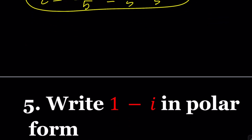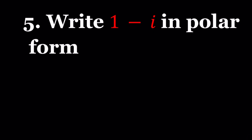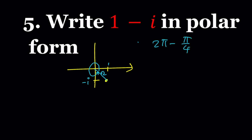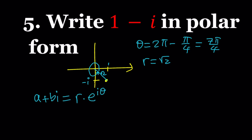Let's take a look at number 5. The question asks for writing 1 minus i in polar form. You can plot it: 1 comma negative 1 is where this number is located. Then think about the distance from 0 — from the Pythagorean theorem, that is square root of 2, which is r. You also need theta. This is a 45-45 triangle, so the angle measured from the positive x-axis is 315 degrees, or 2π minus π over 4, which equals 7π over 4.